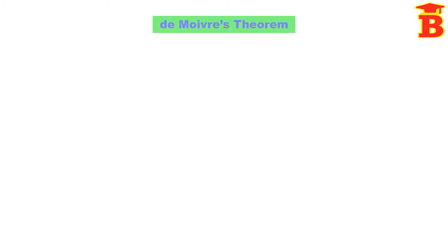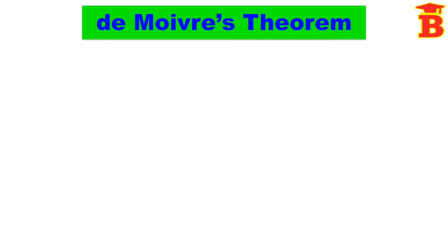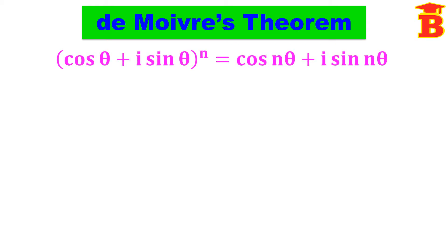Welcome to our channel Bright Mass. De Moivre's Theorem: the statement of this theorem is that (cos θ + i sin θ)^n = cos nθ + i sin nθ.